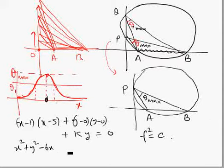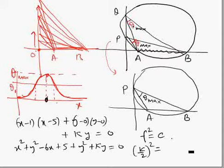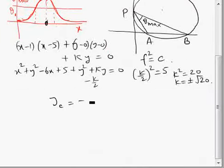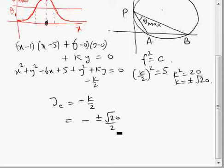So this way we will get the equation of the circle. f squared, you can see f is the coefficient of y, f is k by 2, squared equals c. c is 5. So k squared equals 20, k equals plus minus root 20. Now this point is the y coordinate of the center. And the y coordinate of the center is minus k by 2. So it is minus plus minus root 20 by 2, which is plus minus root 5. So we will take root 5. But minus root 5 is also the answer.